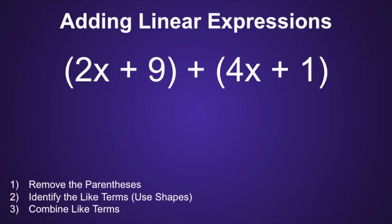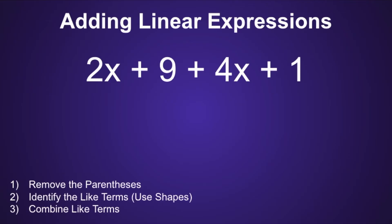Adding linear expressions. There are three steps to add linear expressions. The first step is to remove the parentheses. The second step is to identify the like terms, and we can use shapes to do this. So the like terms in this expression would be 2x and 4x, because they both share the variable x, and then 9 and 1. Notice how I included the sign in front of the terms 9, 4x, and 1. I did this so I would know that these terms are all positive terms.